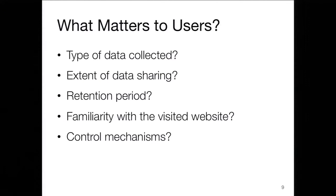In order to do this, we decided to do a study on what actually matters to users. There are a bunch of things that vary depending on which advertising company or tracker we're looking at: what type of information is collected, the extent to which it might be shared, the retention period, how familiar or trusted the website is, and the type of control mechanisms they have. Which of these factors would actually influence users in deciding whether or not to allow the tracking?